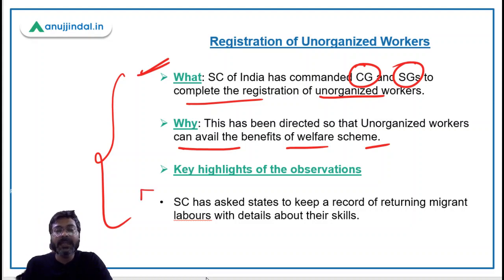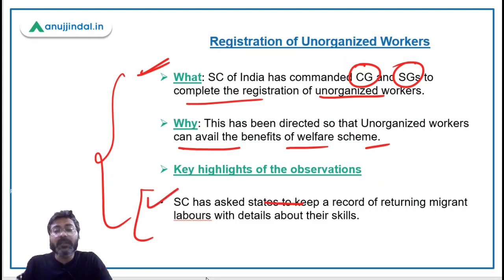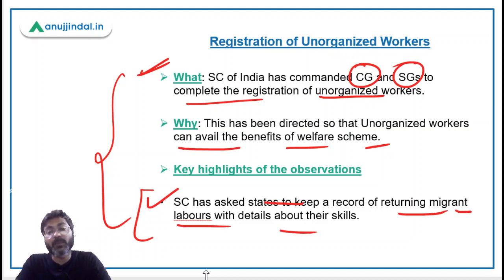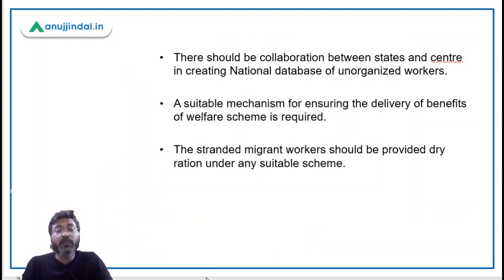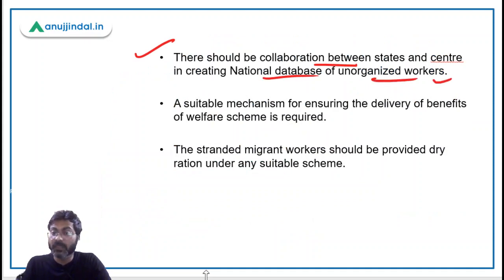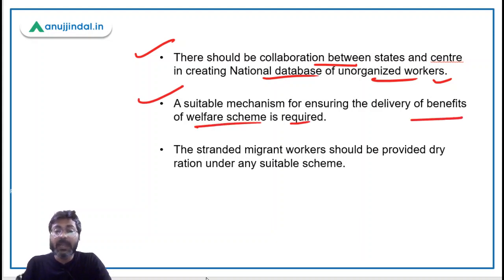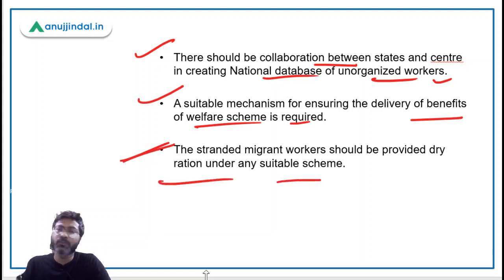Key highlights from the Supreme Court's observations include: states should keep a record of returning migrant laborers with details about their skills, so that jobs can be provided accordingly. There should be collaboration between states and center in creating a national database of unorganized workers, a suitable mechanism to ensure delivery of welfare scheme benefits, and stranded migrant workers should be provided dry ration under any suitable scheme.